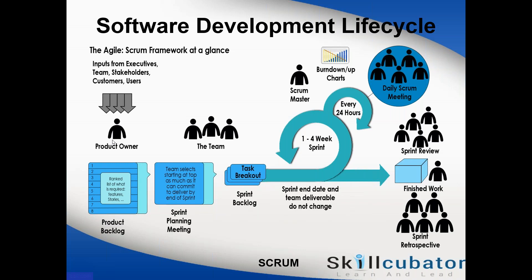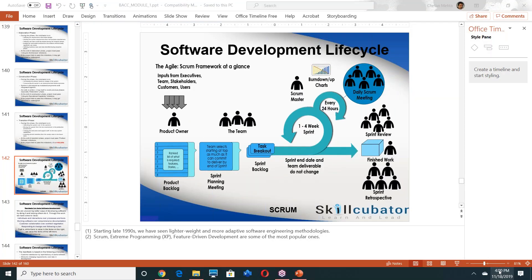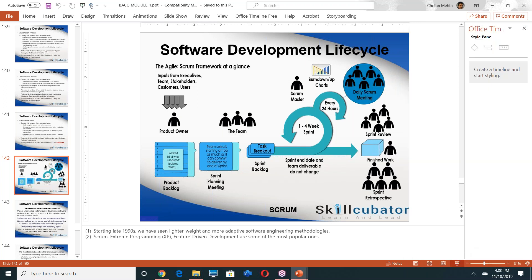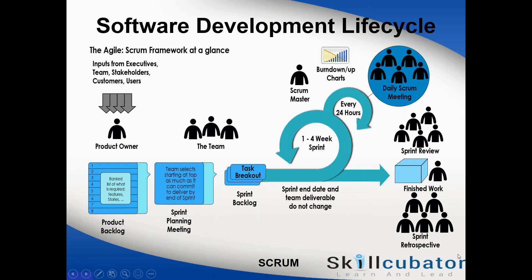Once the team puts all PBIs into the sprint backlog and reaches their velocity limit, the sprint scope is locked. The scope of the sprint is what's included in the sprint backlog — for example, 10 PBIs. Once the sprint starts, you should not change that scope.